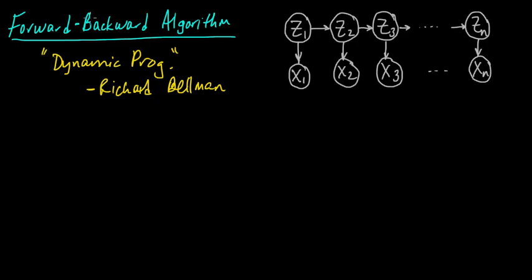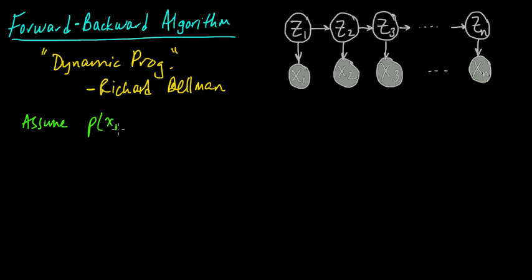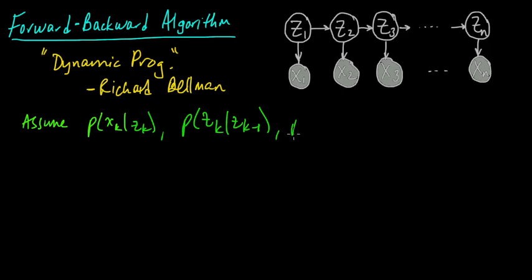So what is the forward-backward algorithm? I've written down the graphical model for the hidden Markov model, and typically we'll assume that the X's are observed. The forward-backward algorithm assumes that we know the distributions — the emission probabilities, the transition probability matrix, and the initial distribution. Assume these are all known.